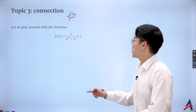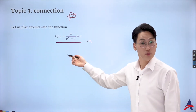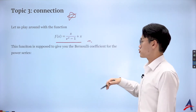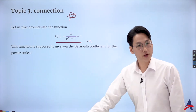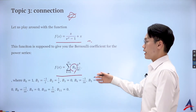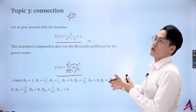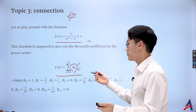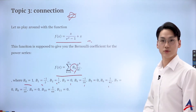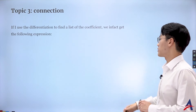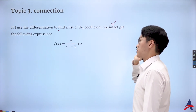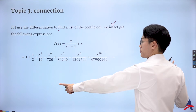What we are going to do is play around with the generating function we derived using the Cauchy product. We want to show that its nth derivative gives the Bernoulli numbers — more precisely, the coefficients give the Bernoulli numbers. We already know the list: the first few terms are 1, negative one-half, one-sixth, 0, negative one over 30, and one over 42, and so on.